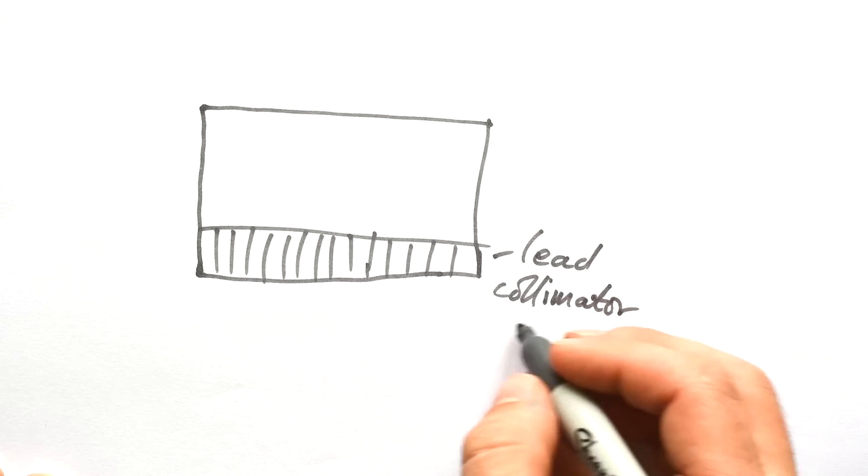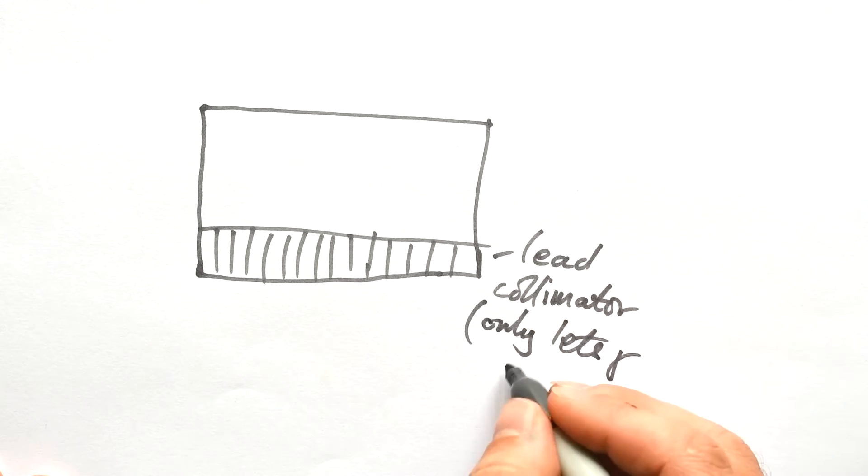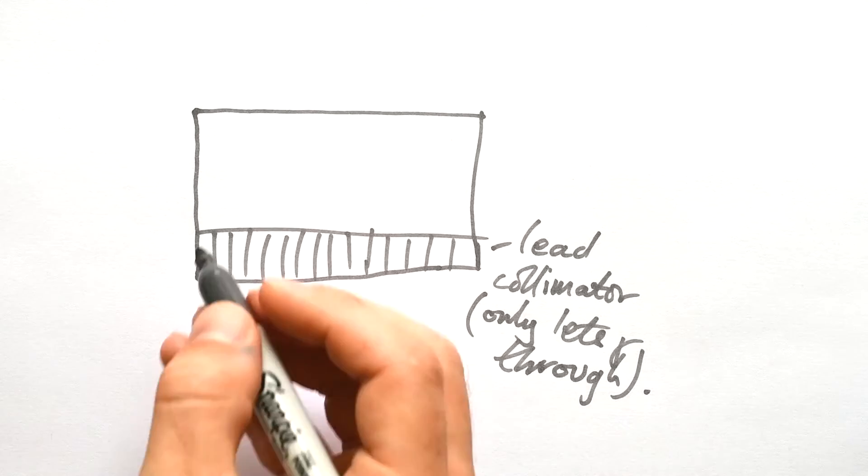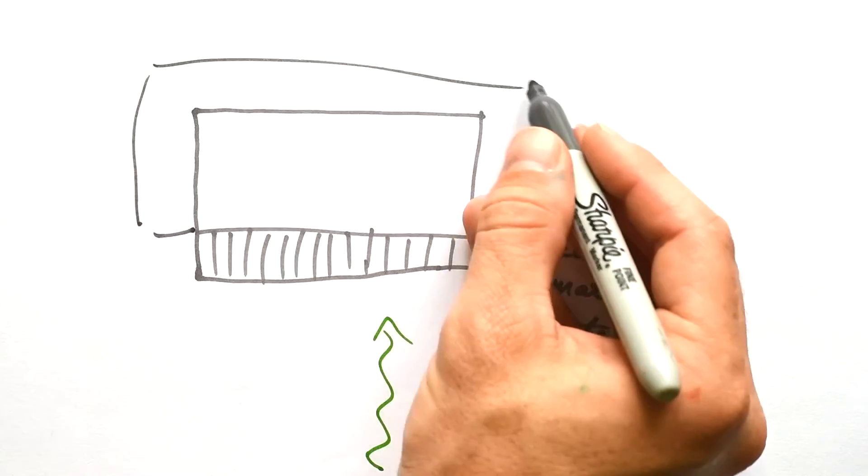First thing we have is a lead collimator that only lets gamma through. So that's going to stop other radiation like alpha and beta from spoofing the camera. And of course, we're going to have a big casing of lead as well around the outside of the camera to stop any gamma getting in from other sources as well. So we want the gamma to come in from this direction. And so we have a thick case on the outside.